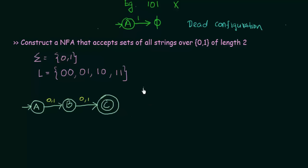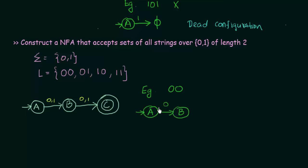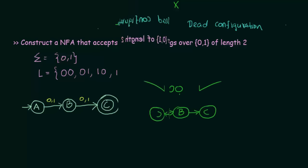Let's take two examples. For string 00: starting at state A, on getting input 0 it goes to state B, and on the second input 0, B goes to state C. I have reached the end of the string and I am in state C, which is the final state, so this string is accepted.